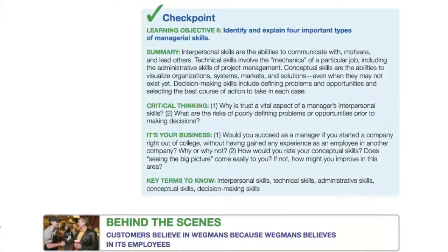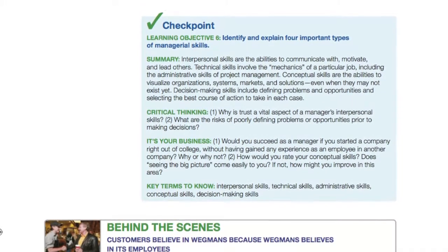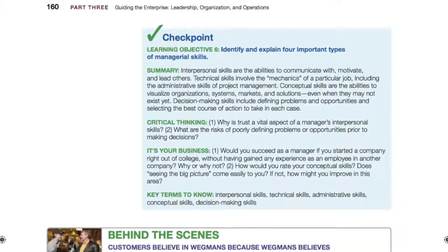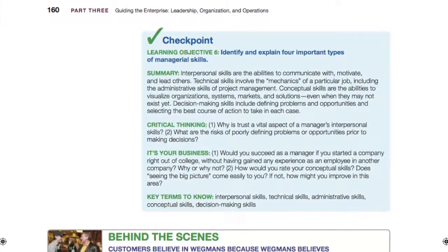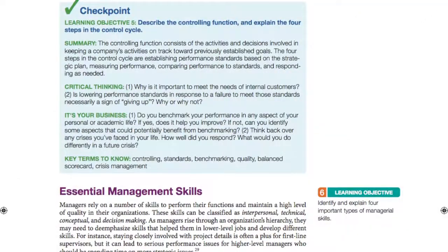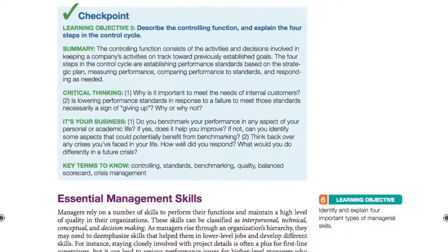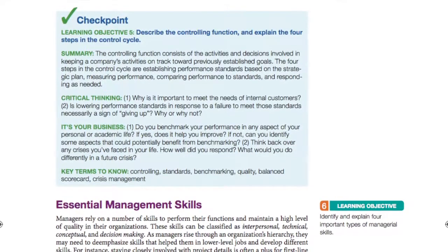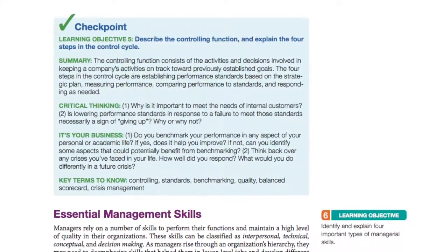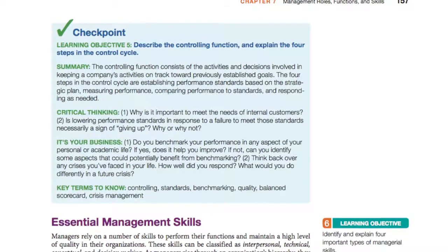Each chapter is divided into six concise segments, each with its own learning objective. Each segment focuses on the most essential concepts and terminology to help students achieve that particular objective before moving on. The consistent structure simplifies course planning and class time allocation for instructors, and it helps students organize their reading, review, and test preparation.